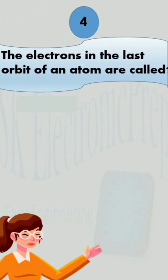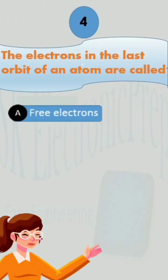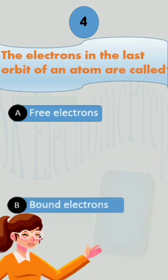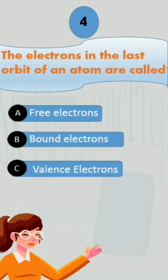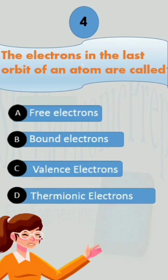The electrons in the last orbit of an atom are called: Option A, Free Electrons; Option B, Bound Electrons; Option C, Valence Electrons; and Option D, Thermionic Electrons.